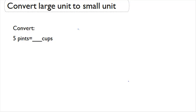So our formula to relate pints and cups is that one pint is equal to two cups. If one pint is equal to two cups, then every one of our five pints is going to be equal to two cups. That's why we need to multiply.